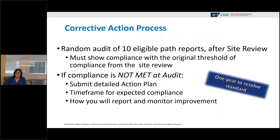For the corrective action process after a deficiency on standards 5.3 through 5.8, programs must conduct a random audit of 10 eligible pathology or operative reports after the site review. The audit must show compliance at the original threshold — 70% for 5.3–5.6 or 80% for 5.7–5.8. If compliance is not met, a detailed action plan must be documented in Cancer Committee minutes. Programs have one year to resolve the standard, submitted through the corrective action PRQ.